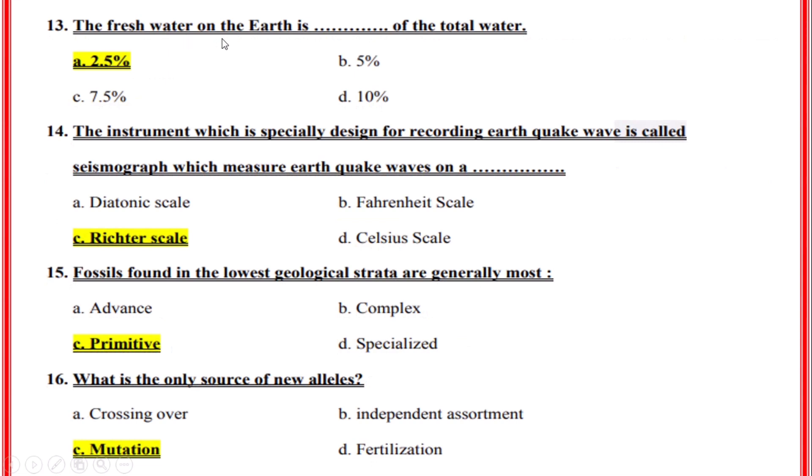The fresh water on Earth is what percentage of total water? Correct option: A, 2.5 percent. The instrument specially designed for recording earthquake waves is called a seismograph, which measures earthquake waves on a Richter scale. Fossils found in the lowest geological strata are generally most? Correct option: C, Primitive.